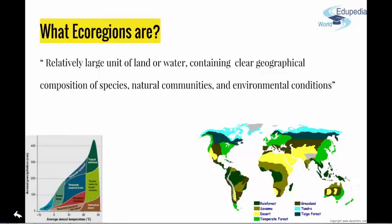In the beginning of, let's say, the 1980s of the 20th century, a tendency to map ecoregions of the world arose and has been in development since. Several standard methods of classification of ecoregions have been elaborated, taking for example climate, altitude, and the dominant type of vegetation as some of the important criteria for classification.